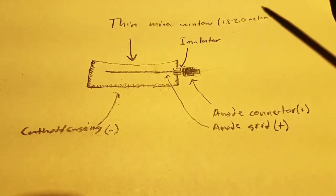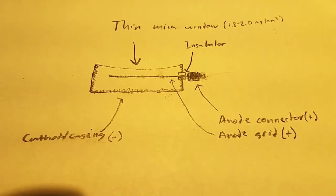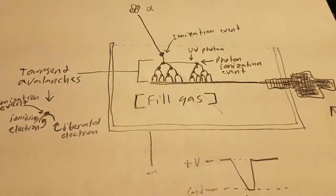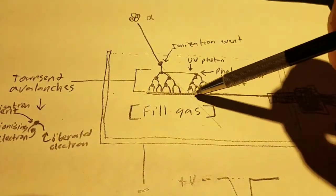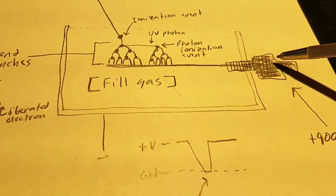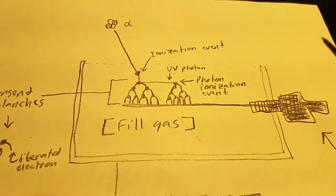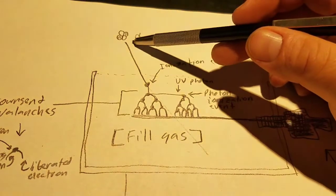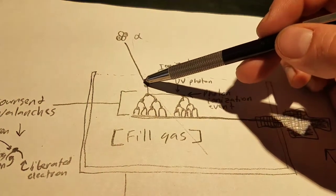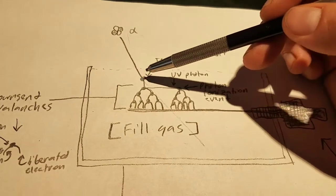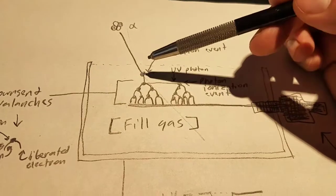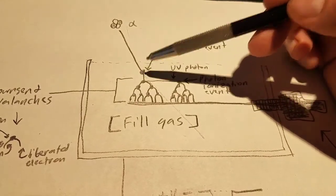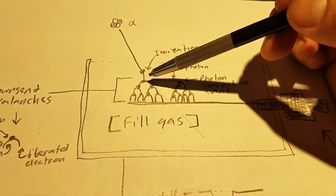I'll flip this over and kind of explain how Geiger tubes work to detect radiation. This is the same tube, this is our anode, our insulator, and anode lug. Basically what happens is as an alpha particle passes through the very thin mica window through the filler gas, when the particle collides or is able to split off electrons, that's called an ionization event.